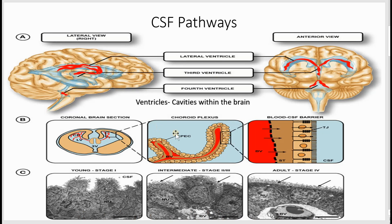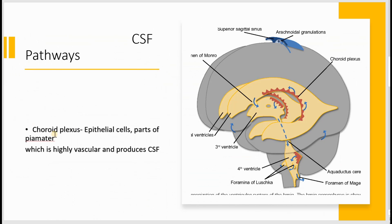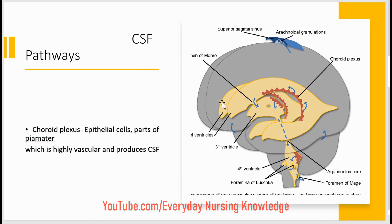Choroid plexus are epithelial cells found in the lateral, third, and fourth ventricles which produce the CSF. They originate from the pia mater — the innermost meningeal layer adherent to the brain and spinal cord. The choroid plexus is highly vascular and it produces cerebrospinal fluid.